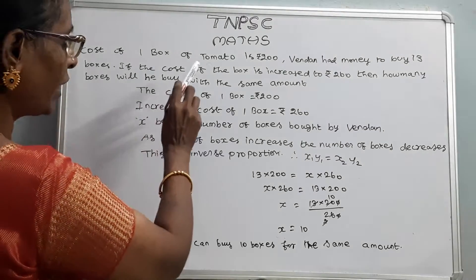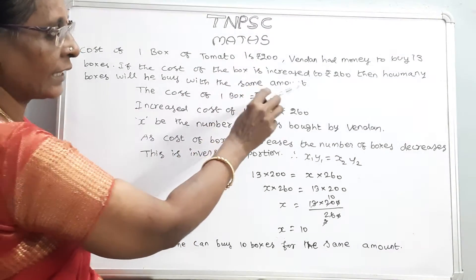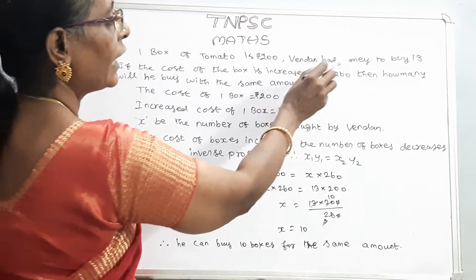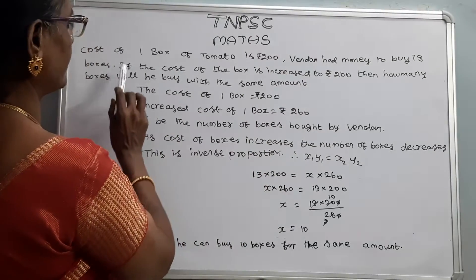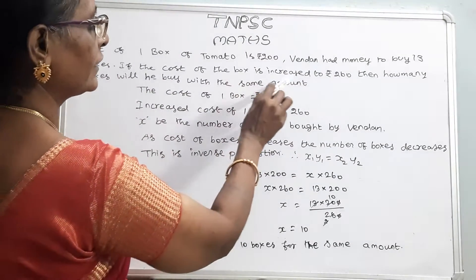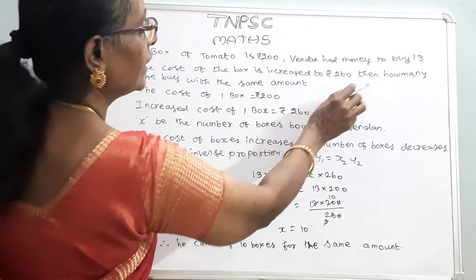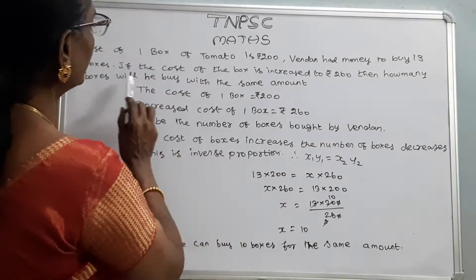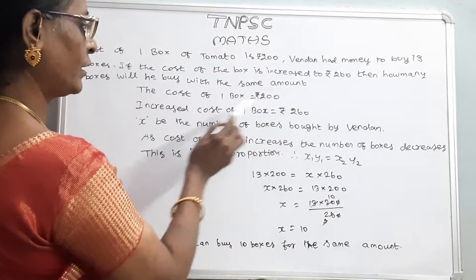The cost of 1 box of tomatoes is Rs. 200. Wendan has money to buy 13 boxes. If the cost of the box is increased to Rs. 260, then how many boxes will he buy with the same amount?